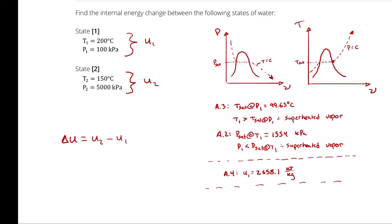Next, we repeat the process for state 2. The general principle is the same: look up the saturation temperature corresponding to our pressure and compare it to our temperature to fix the phase, or look up the saturation pressure corresponding to our temperature and compare it to our pressure. Our pressure at state 2 is 5,000 kilopascals.